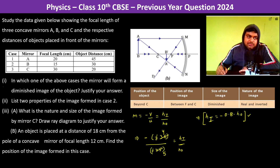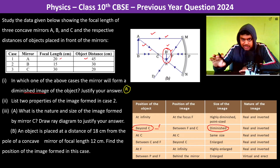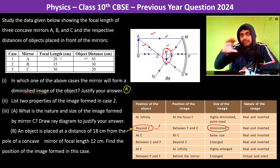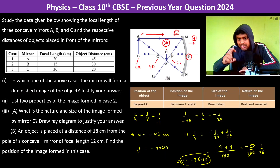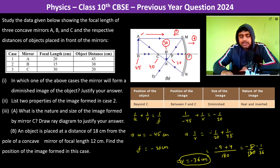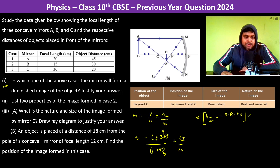For the first question, we refer to the table and remember the entire set of cases. The answer is (a) and we have justified it both by ray diagram and by the mirror equation.